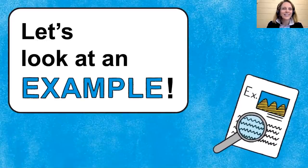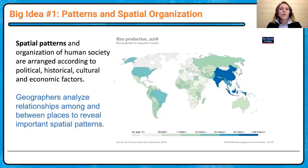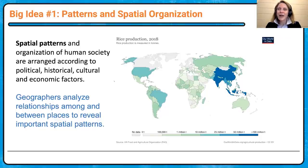These first few slides focus on big idea number one: patterns and spatial organization. Looking at rice production from 2018, we want to ask what trends do you see, and where do we see the majority of rice production? Then we ask why. Your teachers probably discussed environmental determinism. Looking at South Asia, East Asia, and Southeast Asia, the humid subtropical, warm, muggy climate is ideal for growing rice. But sometimes the land isn't always suitable, so we terrace the land to use all available plots.